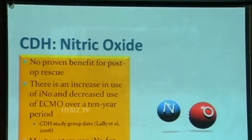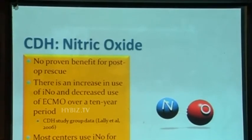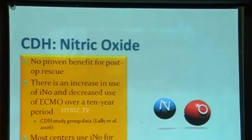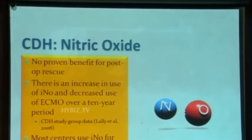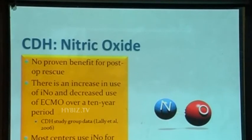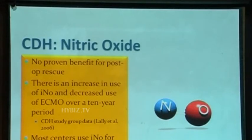Regarding nitric oxide: there is no clear data that it improves survival, but it is easy to institute and does improve pulmonary vascular resistance if there is some reactivity. So it is worth trying — almost all patients who fail conventional ventilation go on nitric oxide. Acute toxicity is minimal. There has been increased use of nitric oxide and a decrease in ECMO usage over the last 10 years. Most centers use it short-term pre-op, and some use low-dose long-term post-surgery, with many now converting to sildenafil.